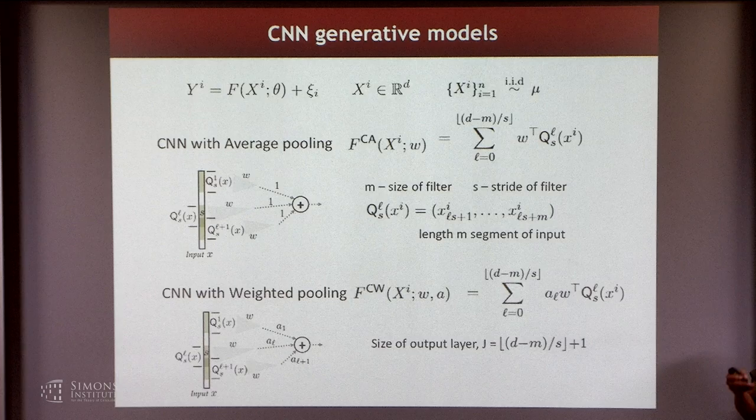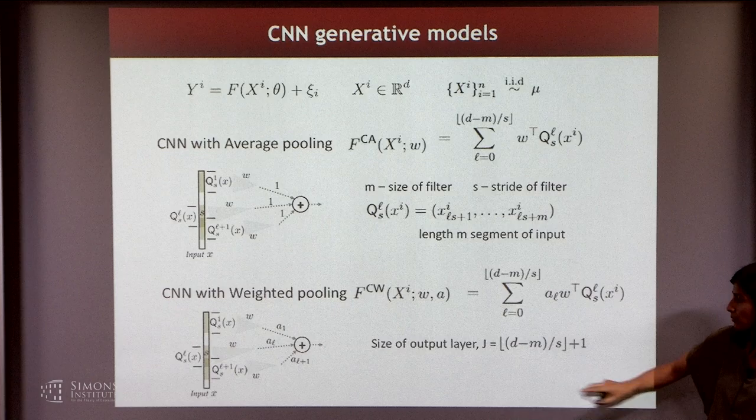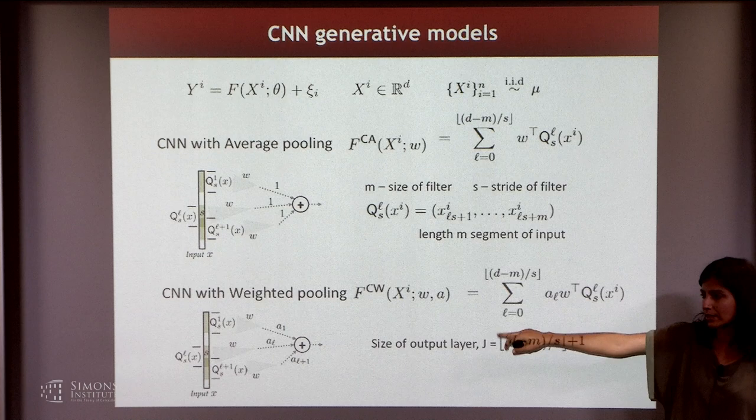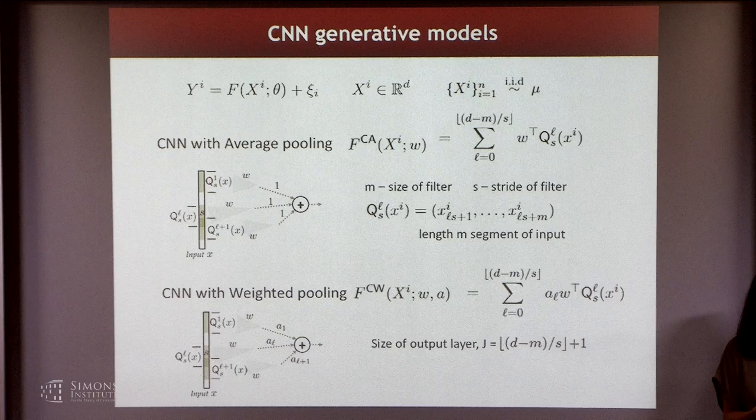The size of the output layer J is given by (D minus M) divided by S. To clarify: there are no non-linearities here. We are in a very simple setting — just one hidden layer, one output layer, everything is linear, and it's realizable. The simplest setting possible. We saw Honey's talk on Monday with non-linear activations, and I'll talk about those differences in a minute.